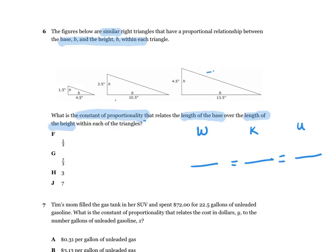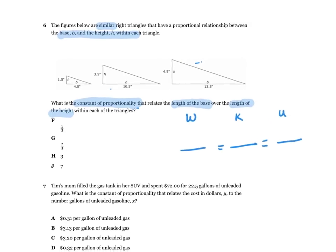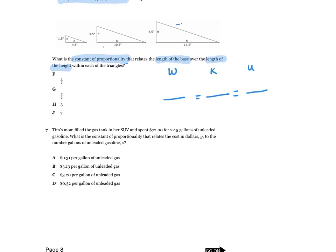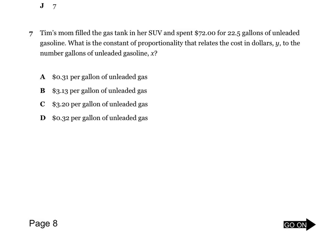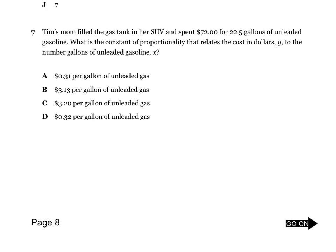You should write a WKU and fill it in. Number seven: Tim's mom filled a gas tank in her SUV and spent $72 for 22.5 gallons of unleaded gas. What is the constant of proportionality that relates the cost in dollars to the number of gallons of gas? She spent $72 for 22.5 gallons. We want the constant of proportionality as cost in dollars over the number of gallons — it tells you exactly how to write it.